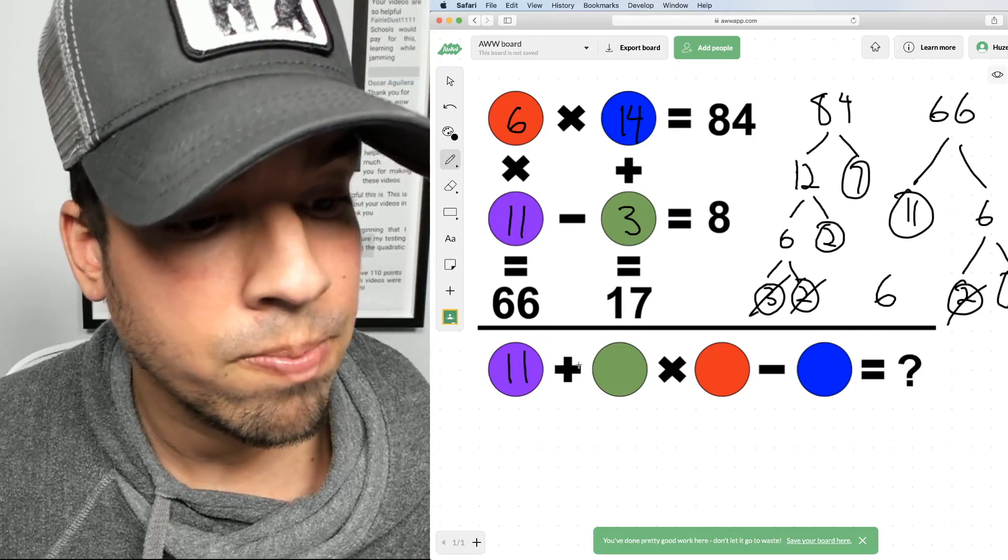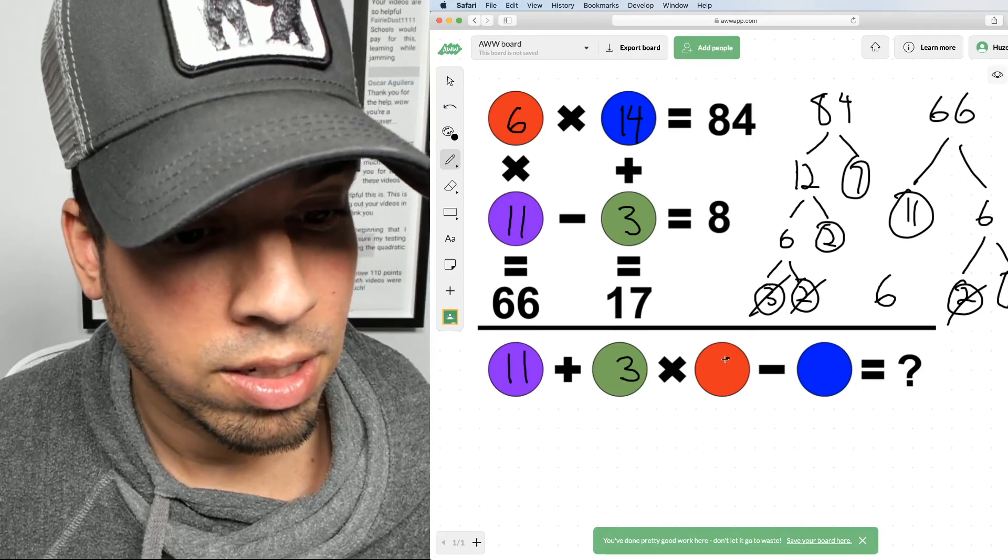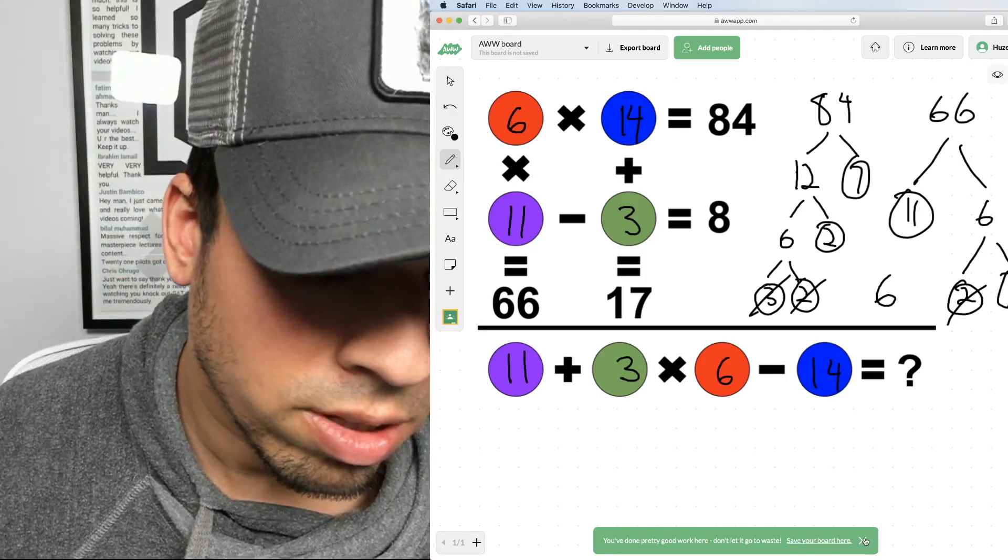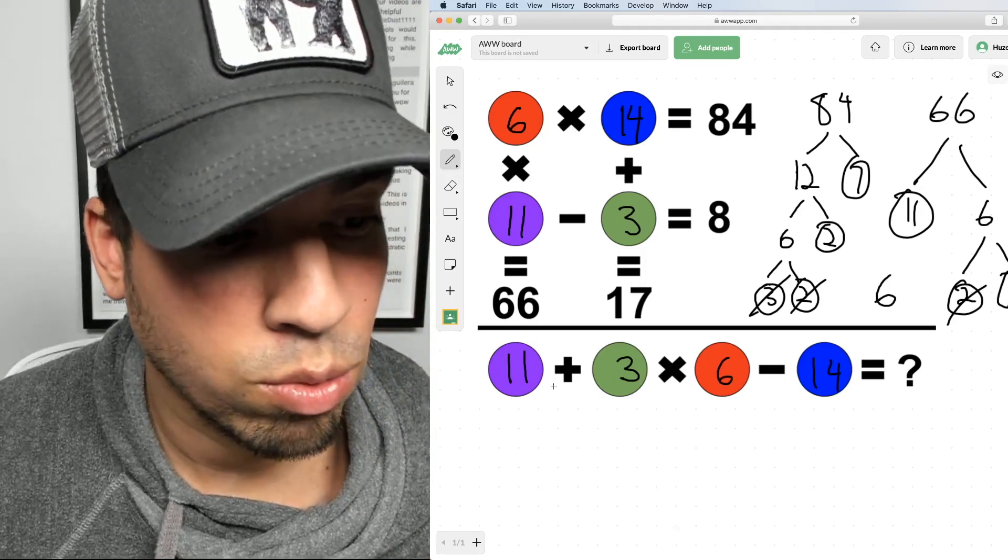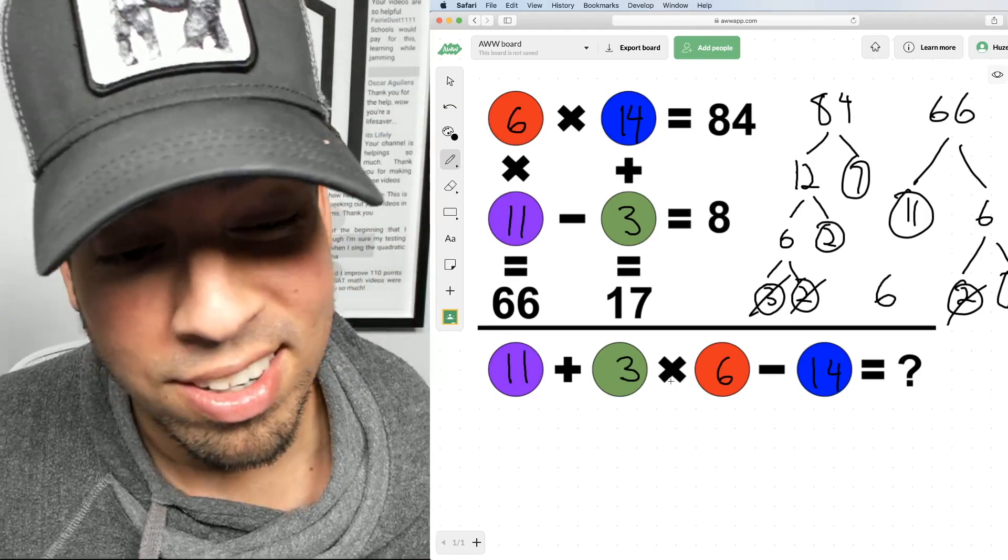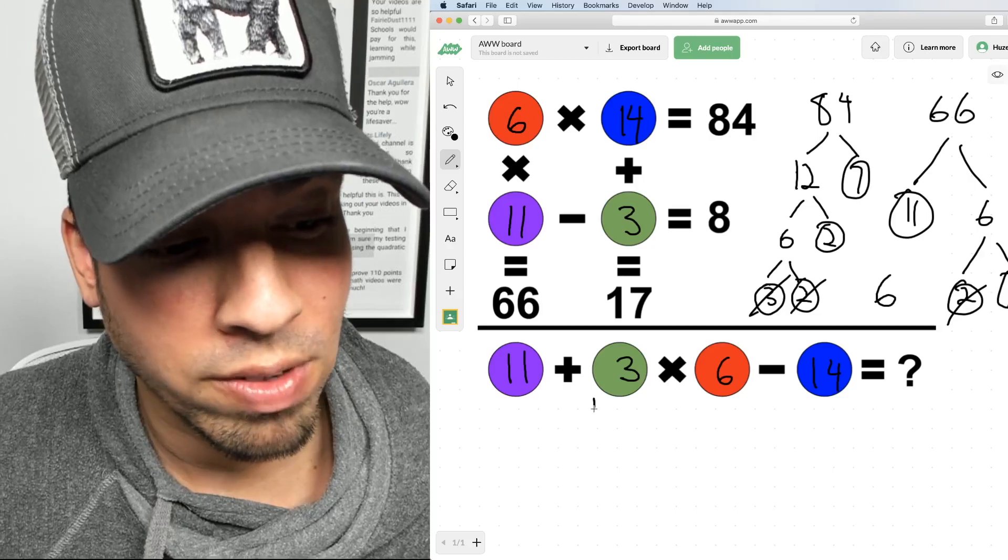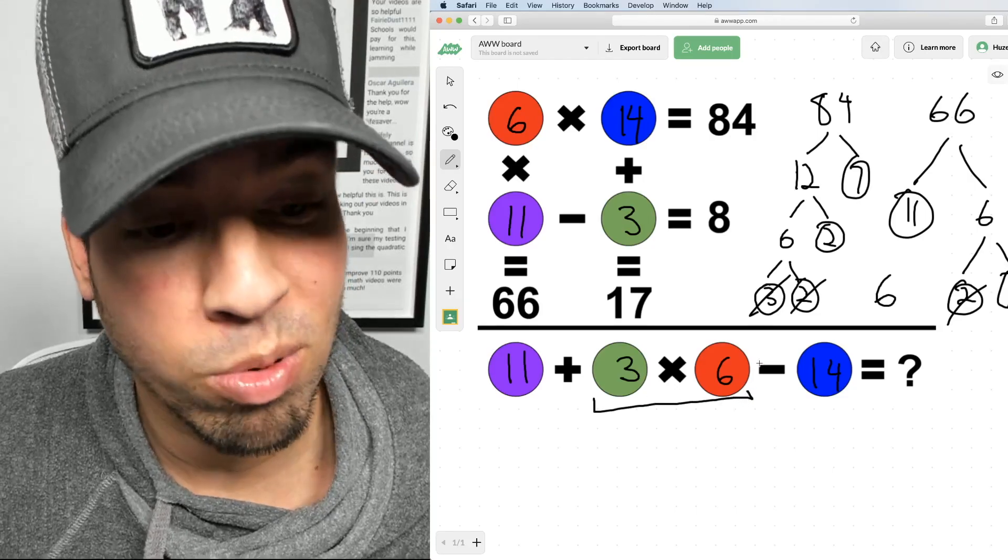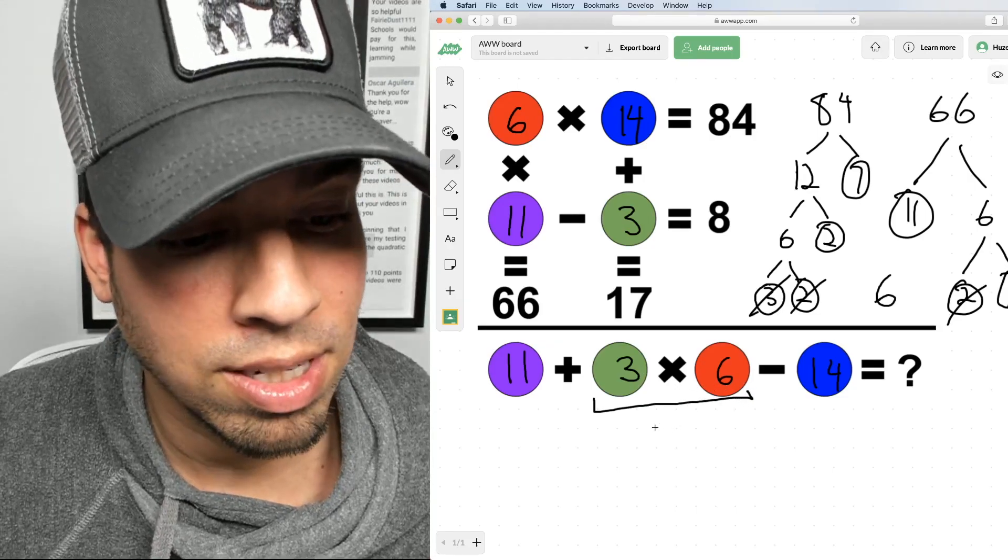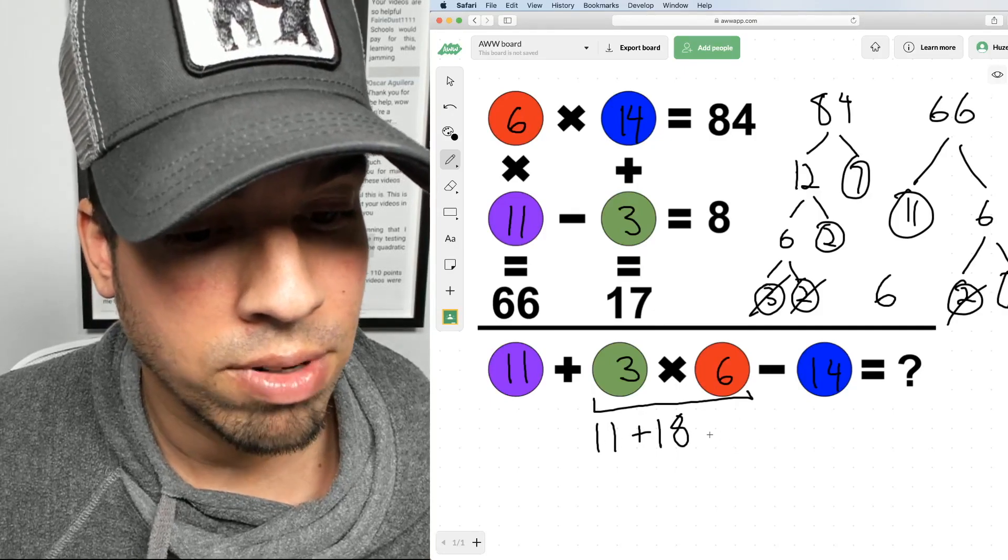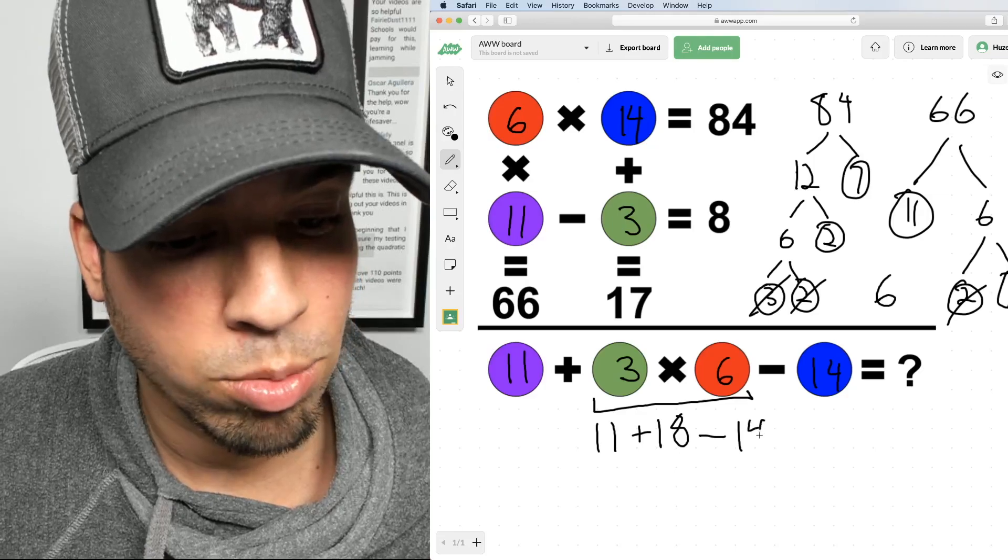Now let's plug them in here. So we've got an 11, a 3, a 6, and a 14. Now let's bring everything together and see what we got. But the important little thing here is to recognize that you've got to pay attention to order of operations. We've got this multiplication. This has to happen before anything else. So what's 3 times 6? That is 18.